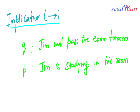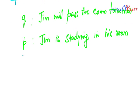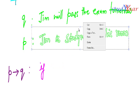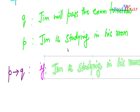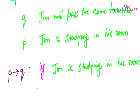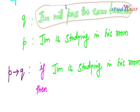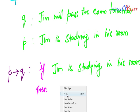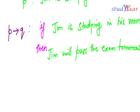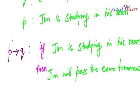To form an implication, I write P implies Q, which is read as 'if P then Q' — meaning: if Jim is studying in his room, then Jim will pass the exam tomorrow. However, P is not the only condition that is going to ensure Q.